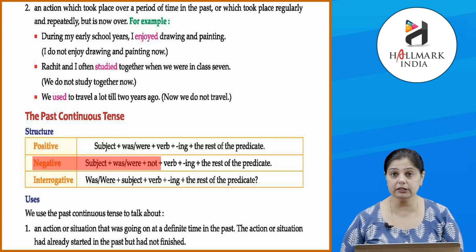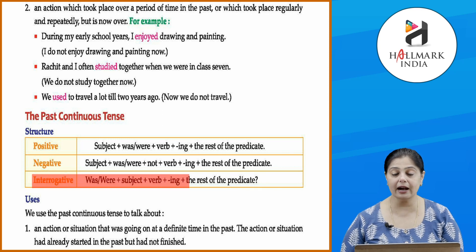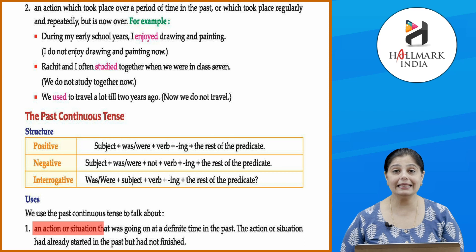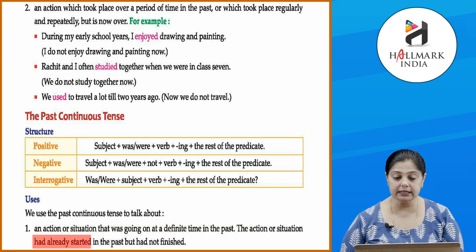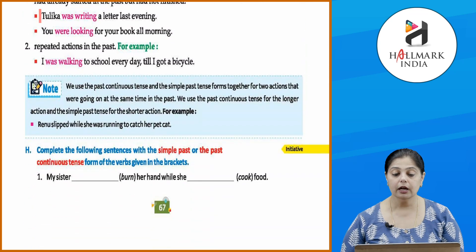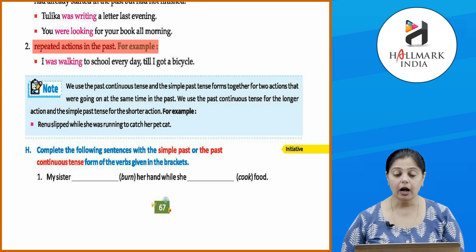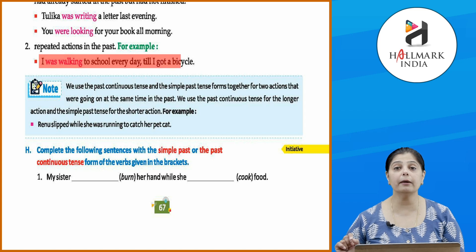Past continuous tense — negative: subject plus was/were plus not plus verb plus 'ing' plus rest of the predicate. Interrogative: was/were plus subject plus verb plus 'ing' plus rest of the predicate. We use the past continuous tense to talk about an action or situation that was going on at a definite time in the past — the action had started but had not finished. For example: 'Tulika was writing a letter last evening'; 'You were looking for your book all morning.' Also for repeated actions in the past: 'I was walking to school every day till I got a bicycle.'